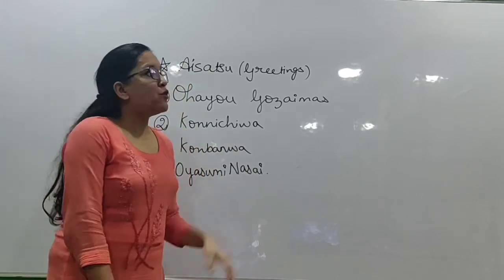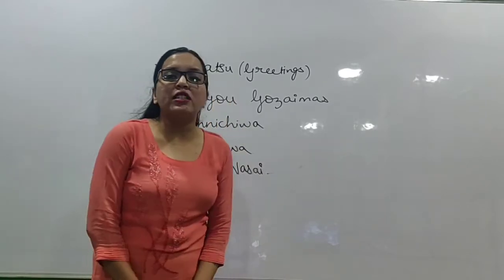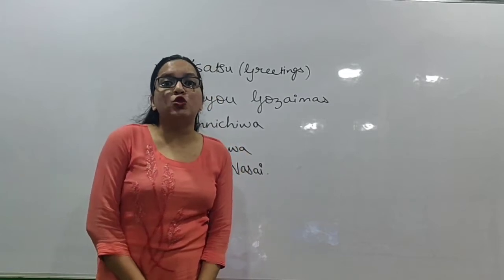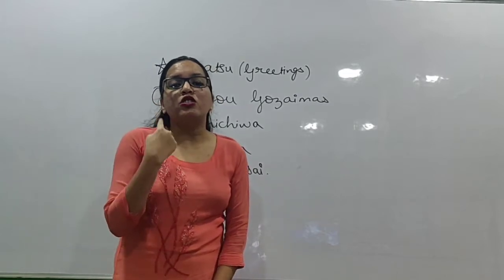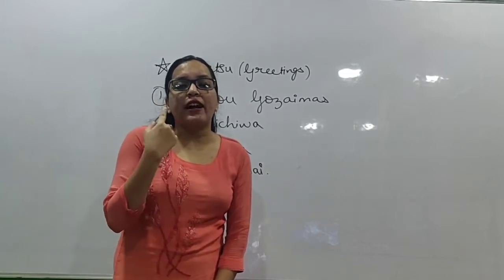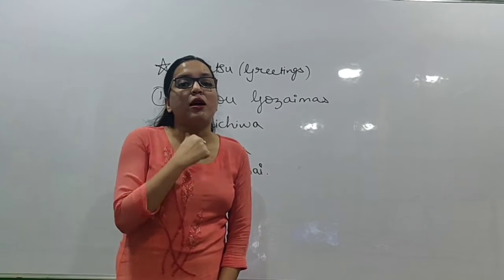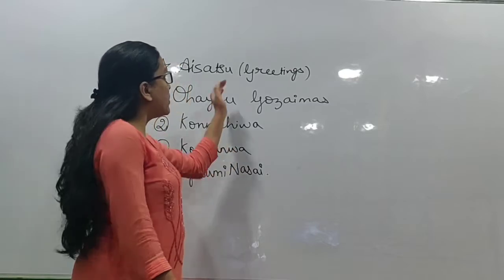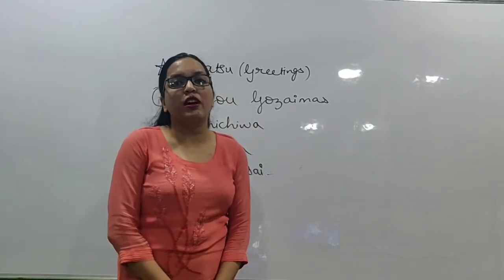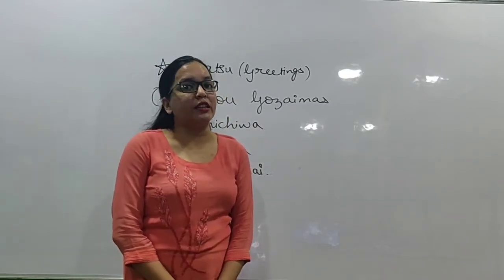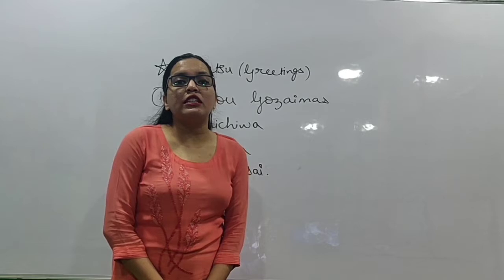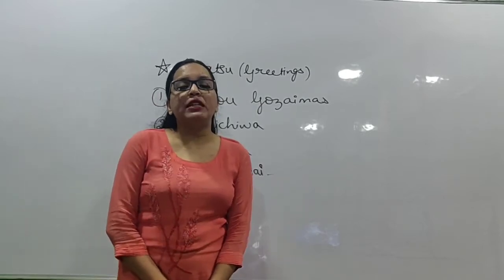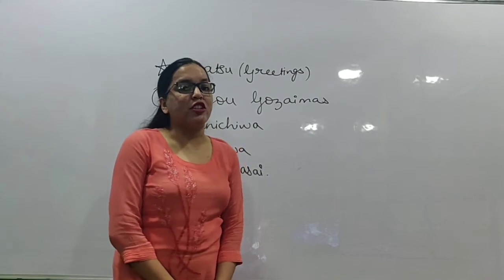We have to be very careful with this pronunciation. The last alphabet is not 'Su' but 'Tsu.' The tongue should be twisted and touching the upper gums — only then can we pronounce this alphabet correctly. This alphabet is known as Tsu. So Aisatsu means greetings in Japanese language.